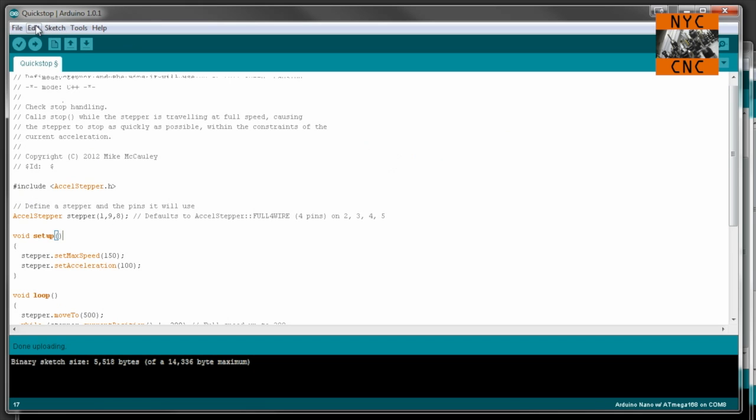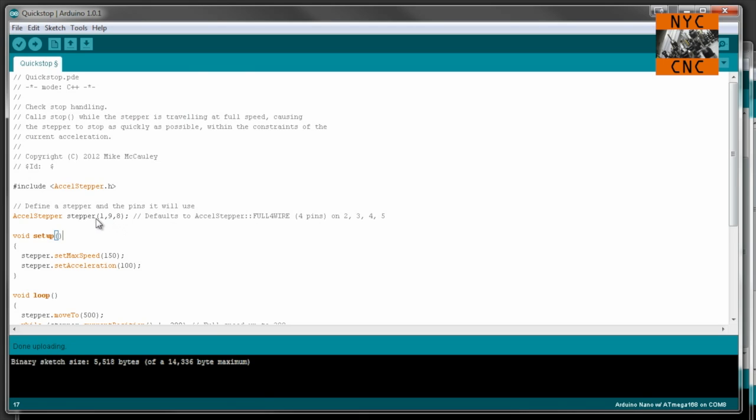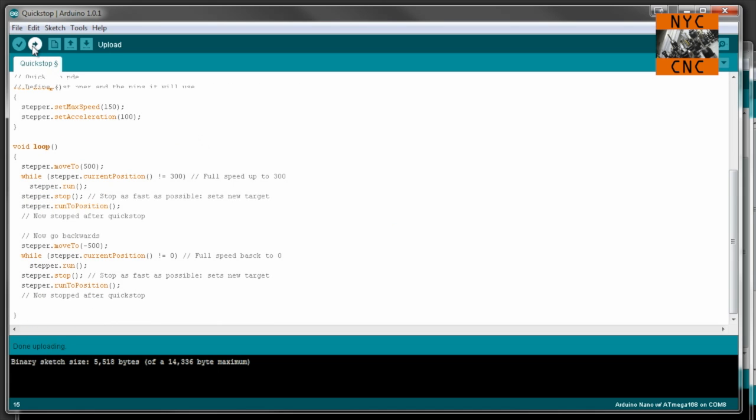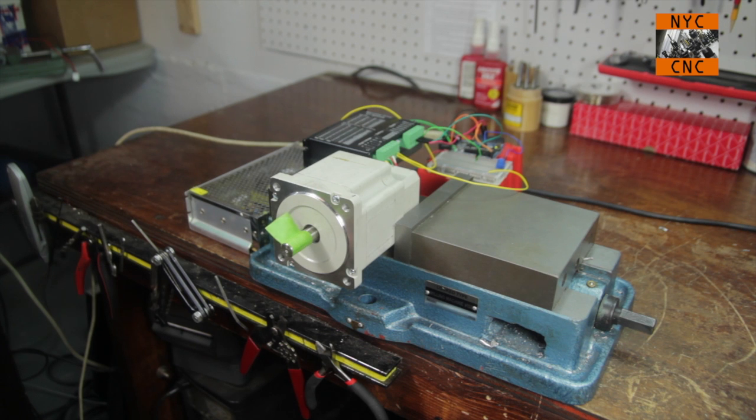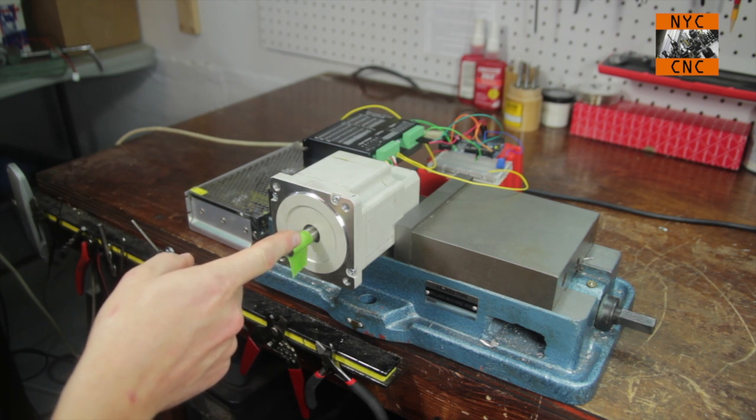The last one I wanted to run was one called Quick Stop. Again, these are all from the Accel Stepper library. I did misspeak a minute ago though. The default program comes without this parenthetical here. You do need to add, in my instance, defining the stepper as pins 1, 9, and 8. Otherwise it defaults to this. What this will do is, let's upload it. This will go forward and then stop.